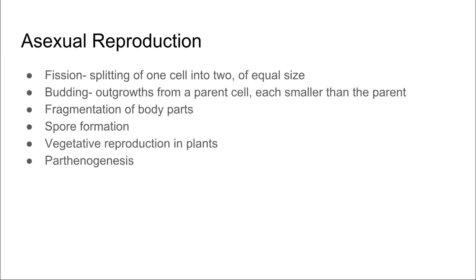The six types of asexual reproduction are listed on this slide: fission, budding, fragmentation, spore formation, vegetative reproduction in plants, and parthenogenesis. Fission is the splitting of one cell into two of equal size, and budding is where we see outgrowths from a parent cell, each smaller than the parent. We're going to look at the other four as we move through the video.